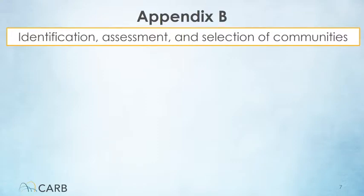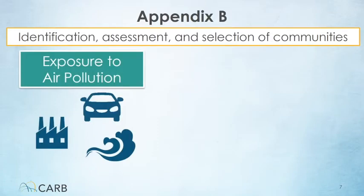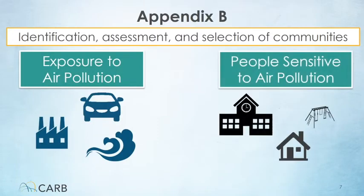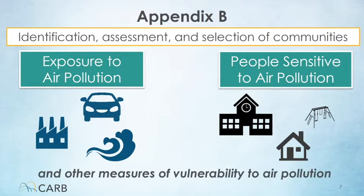Appendix B covers the process to identify impacted communities. It also includes criteria that CARB uses to select communities for focused action. The assessment includes factors like exposure to air pollution, people who are most sensitive to air pollution, and other measures of vulnerability such as public health data and socioeconomic factors.